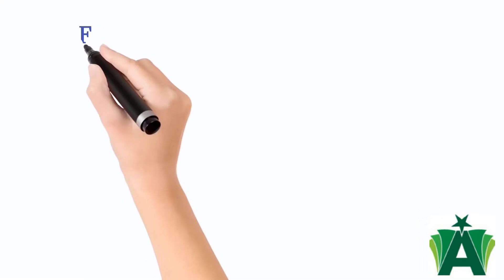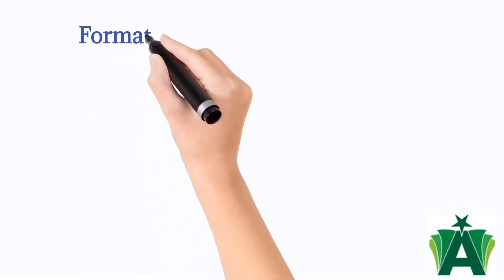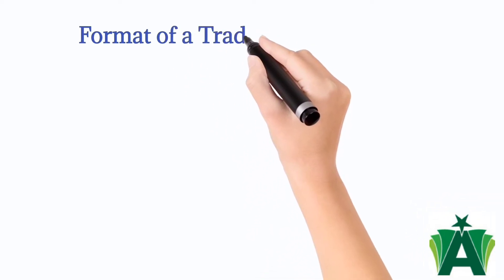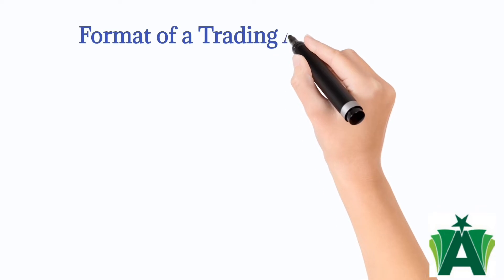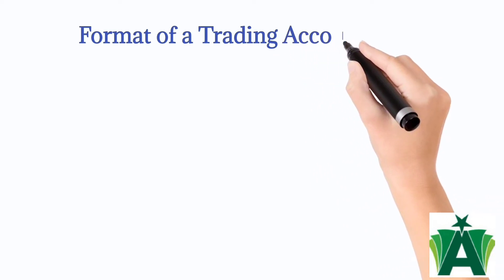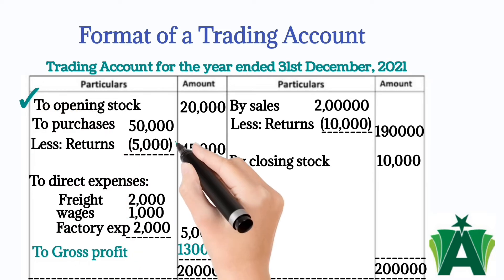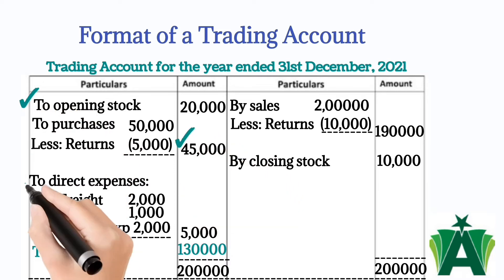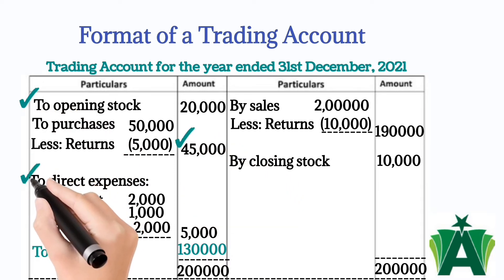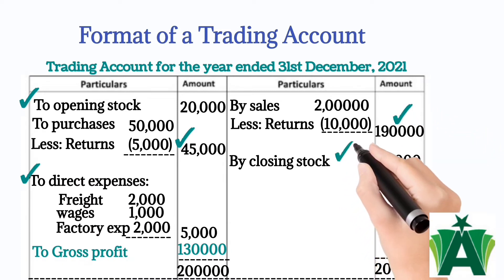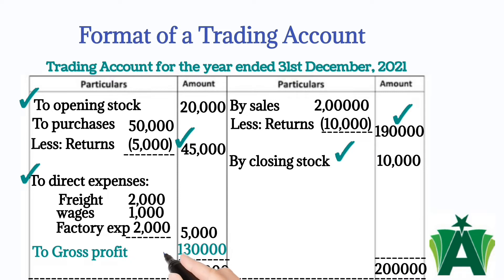Format of trading account: a trading account can be prepared either in horizontal format (T-form) or vertical format. In the horizontal format, the debit side records opening stock, net purchases, and all direct expenses. The credit side of the trading account records net sales and closing stock.